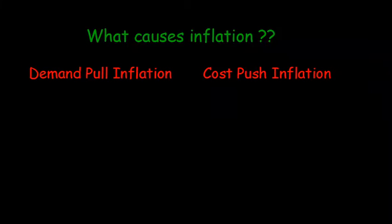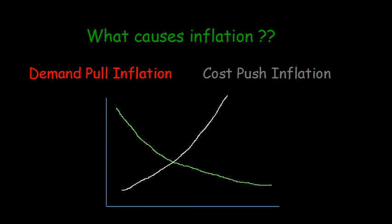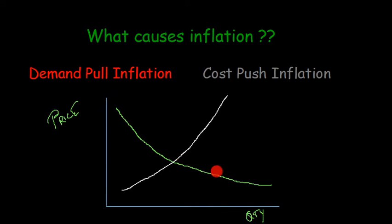Most of you might be aware of the simple demand and supply graph. On the y-axis we have price, and on the x-axis we have quantity. The green curve here is the demand curve — as the price increases, the quantity decreases, and as the price decreases, the quantity increases. The white one is the supply curve — as the price increases, the quantity increases.